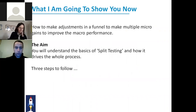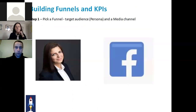What I'm going to show you now is how to make adjustments in a funnel to make multiple micro gains to improve that macro performance — how you fatten that funnel. By the end of this I aim that you have a solid understanding of how split testing works and how it drives the whole process. There are three steps to follow. First one: pick a funnel. We've already talked about this — pick a funnel. In this case we're going to use Debs Prior as the target audience and Facebook as the media channel.